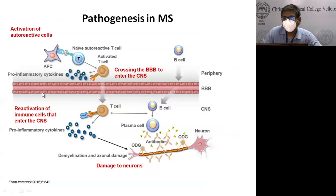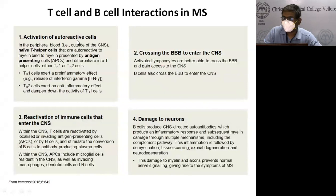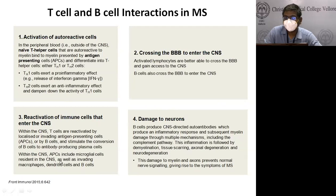In MS pathogenesis, both T cells and B cells are involved. T cells are activated in the periphery by antigen-presenting cells, release pro-inflammatory cytokines, and cross the blood-brain barrier. B cells also cross the blood-brain barrier. Inside the intrathecal compartment, both cell types are reactivated and produce cytokines; B cells differentiate into plasma cells that produce antibodies attacking oligodendroglia and myelin, eventually causing neuronal damage. The four stages are: activation of autoreactive cells, crossing of activated lymphocytes into the CNS, reactivation inside the CNS, and damage to neurons and myelin.